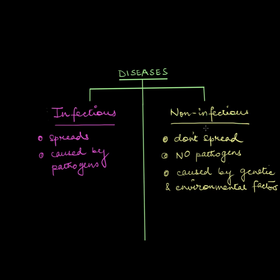However, you can prevent acquiring most of these diseases if you lead a healthy lifestyle. Now, there are some risk factors like age, gender, and genes that you can't avoid. For example, you become susceptible to diseases when you are old. Some cancers are gender-specific, and diseases like cystic fibrosis are entirely genetic.